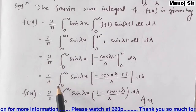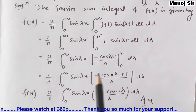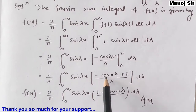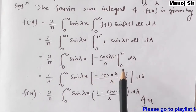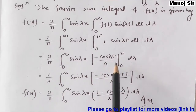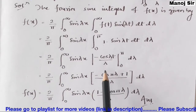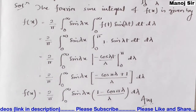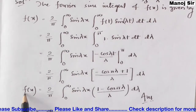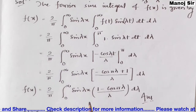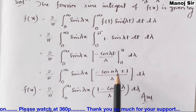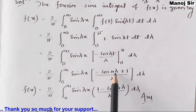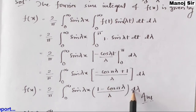So f(x) = (2/π) × integration from 0 to infinity of sin(λx) × [−cos(λπ)/λ + cos(0)/λ] dλ. Since cos(0) = 1, this simplifies to (2/π) × integration from 0 to infinity of sin(λx) × (1 − cos(πλ)) / λ dλ. This is the final Fourier sine integral representation.